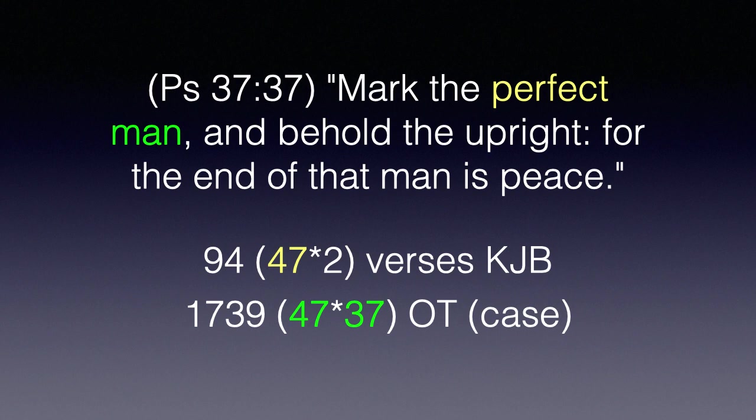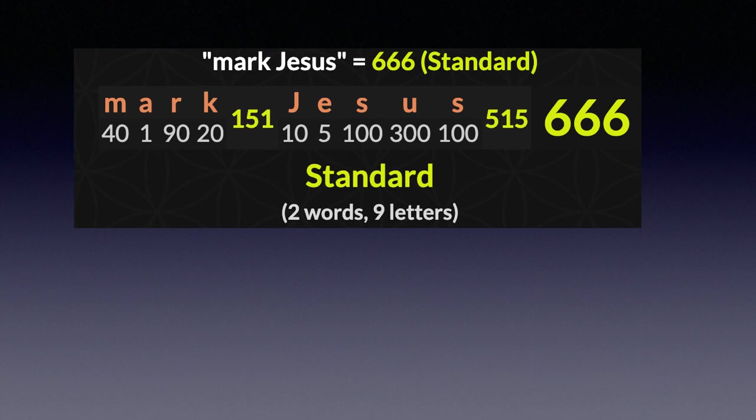Was Jesus Christ marked? He was marked in his hands, in his feet, and on his head with the crown of thorns. If you combine the word 'mark' and the name 'Jesus' using the standard English cipher, it has a value of 666. Jesus has a value of 515, and Psalm 37 is the 515th chapter of the Bible. This is not a coincidence.